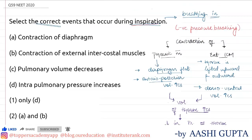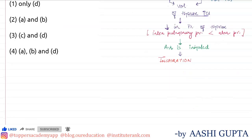Remember that inspiration is an active process — it requires ATP or energy. Now, when these muscles relax — that is, when phrenic muscles and external intercostal muscles relax — what happens leads to expiration.